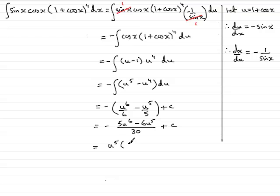Swapping these around would just leave me with a 6 there, and then a minus 5u there, and that would be all over 30 plus c.